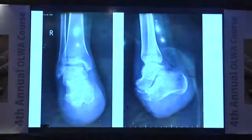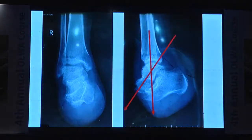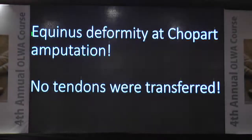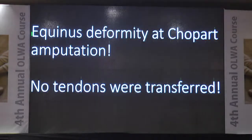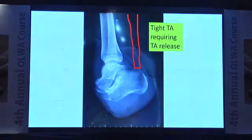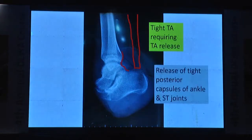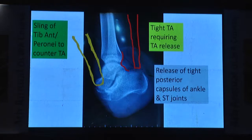If you see the axis, the talus is quite plantar flexed — equinus deformity at Chopart amputation. There were no tendons transferred. Tight tendo Achilles requiring release, release of tight posterior capsules of ankle and subtalar joint, and you need to make a sling of tibialis and peronei to counter tibialis and tendo Achilles.